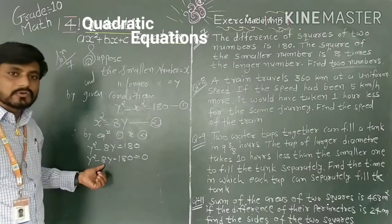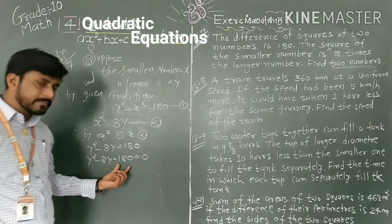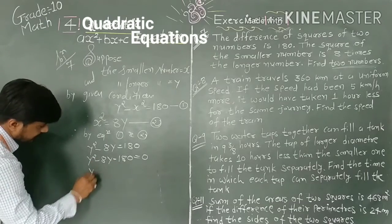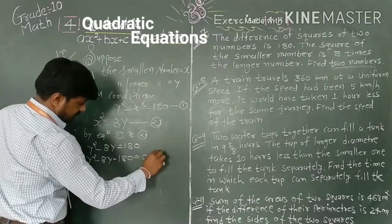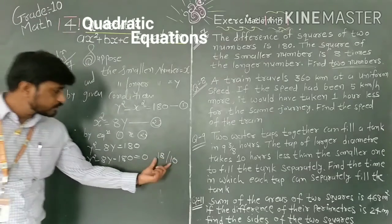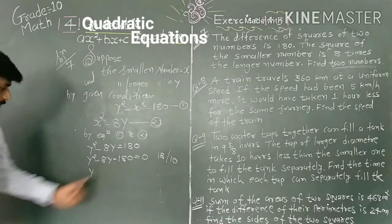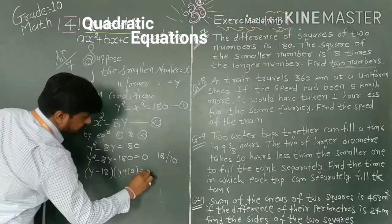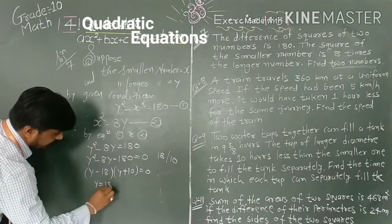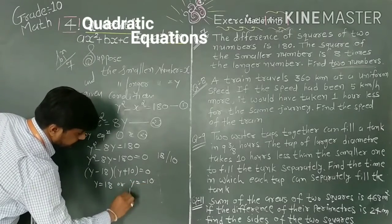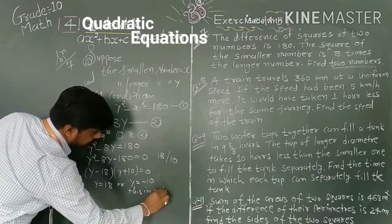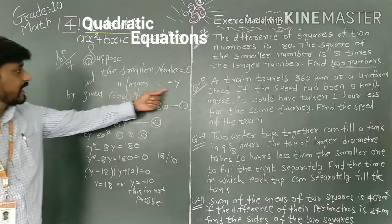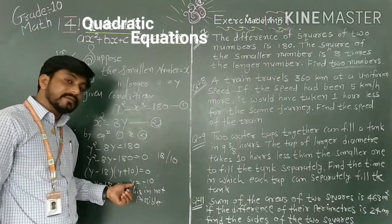Now I factorize this quadratic equation. The product is 180 and the sum is -8. The factors are 18 and -10, giving (y - 18)(y + 10) = 0. So y = 18 or y = -10. y = -10 is not possible because y is the larger number and cannot be negative.